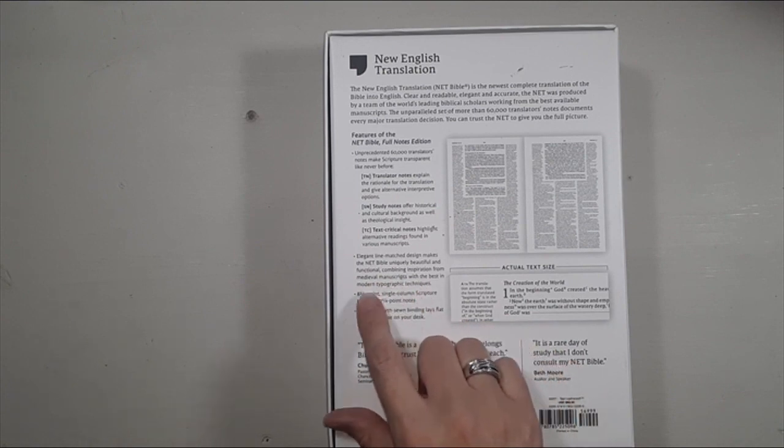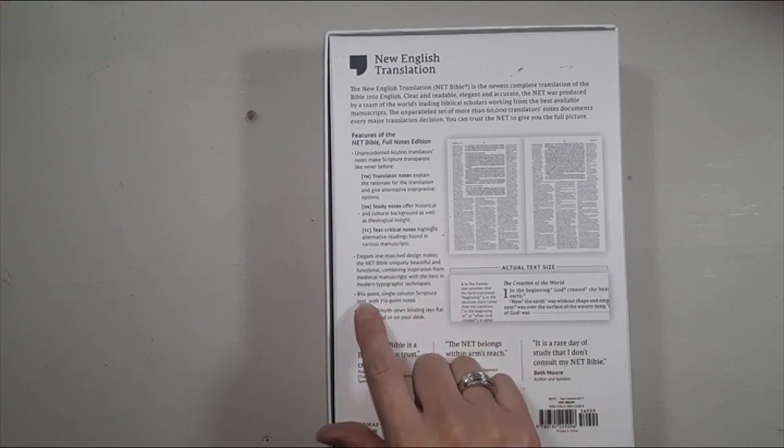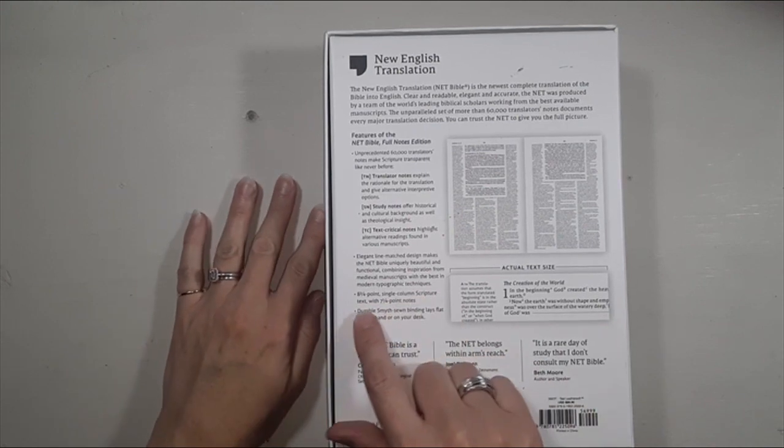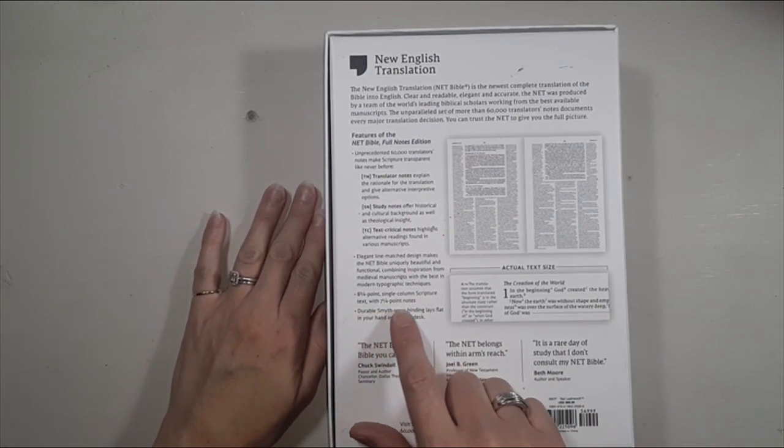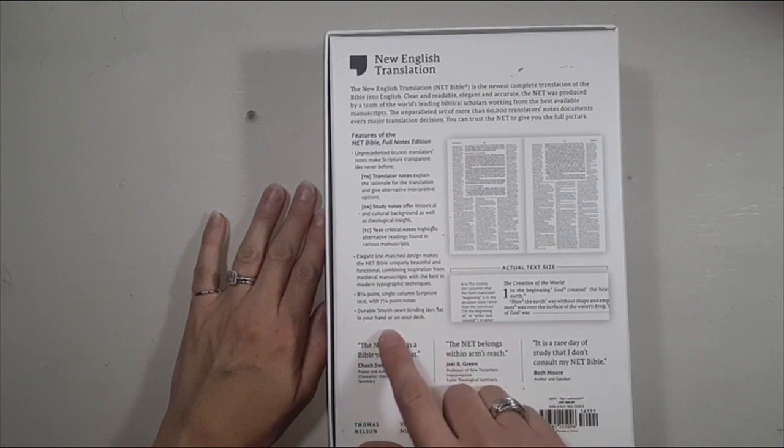Elegant line match designs make the NET uniquely beautiful and functional, combining inspiration from medieval manuscripts with the best in modern typographic techniques. 8.75 point single column scripture text with 7.25 point notes. Durable Smyth-sewn binding lays flat in your hand or on your desk.